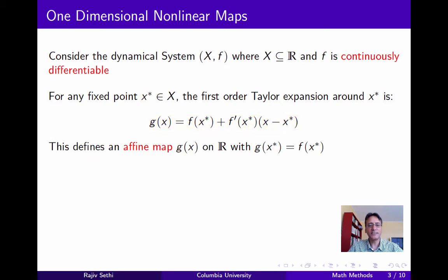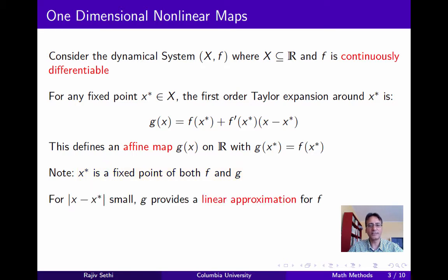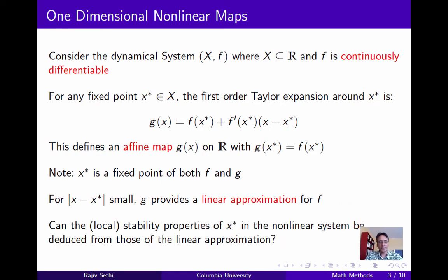Now you can see that g is an affine map on ℝ, with the property that g equals f. And since x-star is a fixed point of f, this immediately implies that it's also a fixed point of g. Now when x is close to x-star, g provides a linear approximation, and the key question we want to address is: under what conditions can the local stability properties of x-star in the non-linear system be deduced from the stability properties of x-star in the linear system?